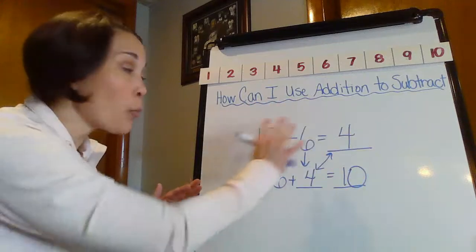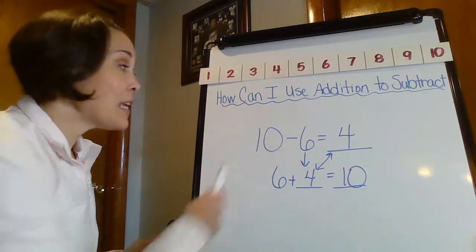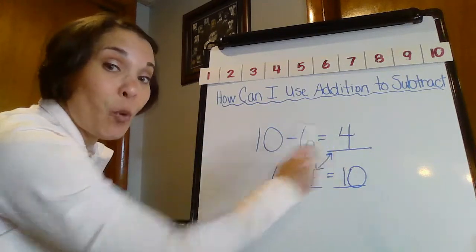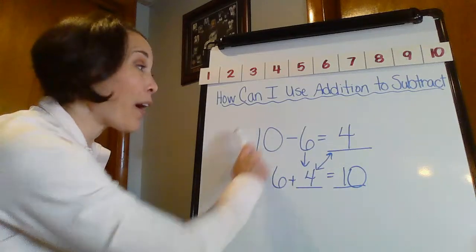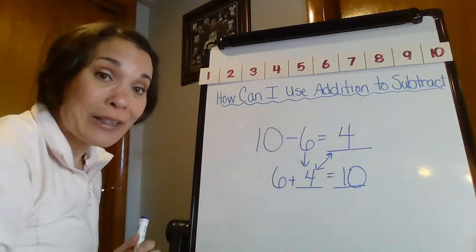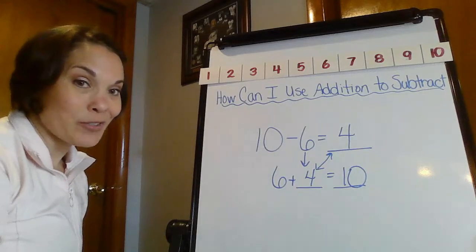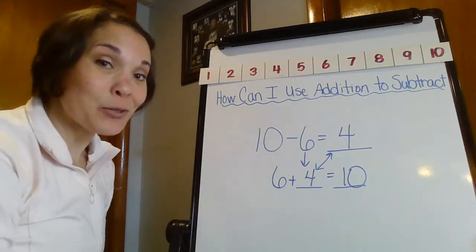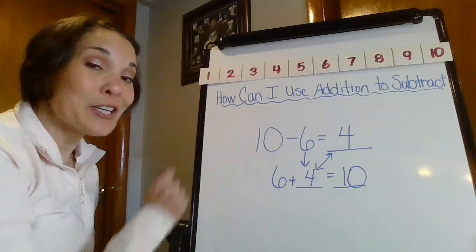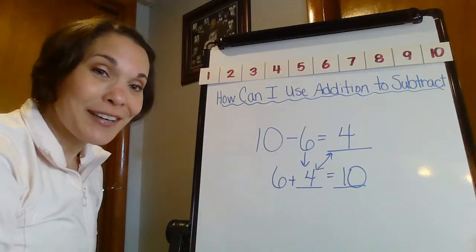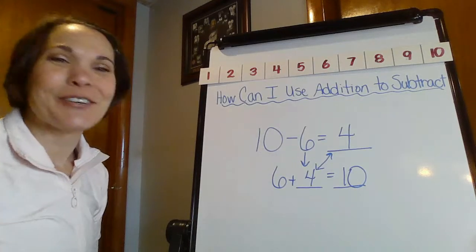These again are part of a fact family: 10, 6, 4. 10, 6, 4. They are all related. So boys and girls, I hope you like our little tutorial on using addition to figure out some subtraction. And I'll be talking to you all again soon. Bye, everybody.